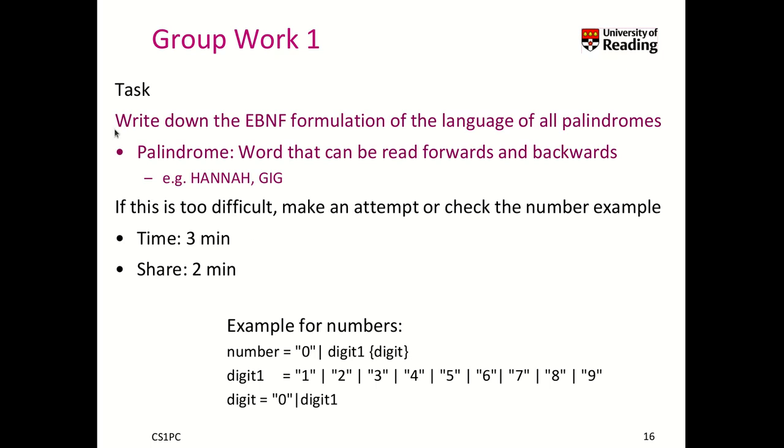So now let's think about group work one, which I think you do alone for now, but you can discuss on our channel in Teams. Write down the EBNF formulation of the language of all palindromes. So what is a palindrome? Well, a word that can be read forward and backwards at the same time with the same character. So the word hana is, if you read it forward, it is hana, but if you read it backwards, it's also hana. And gig as well. Gig and gig is always the same. Well, if you find this too difficult, try, make an attempt to write down the rules or check our number example. Here was our number example that we had over here. And now pause the video and try to resolve this matter. It's really a good idea to test on a couple of those examples how you would basically apply those production rules.